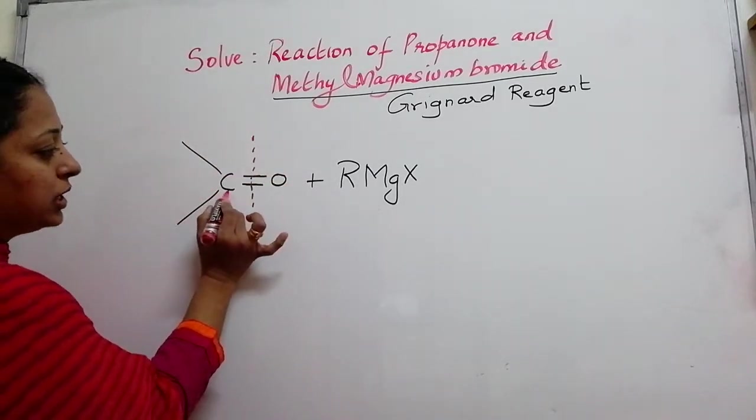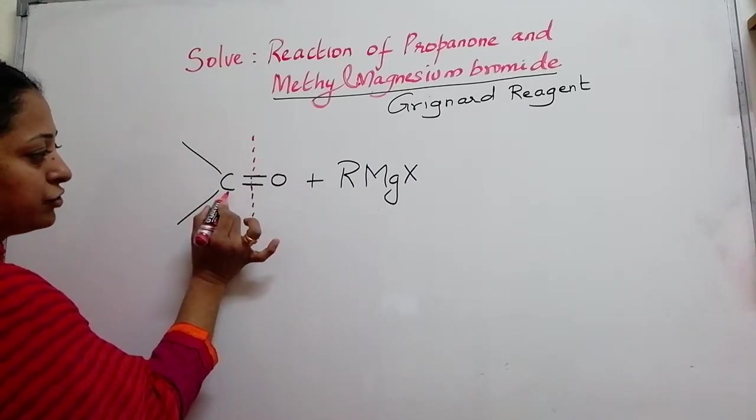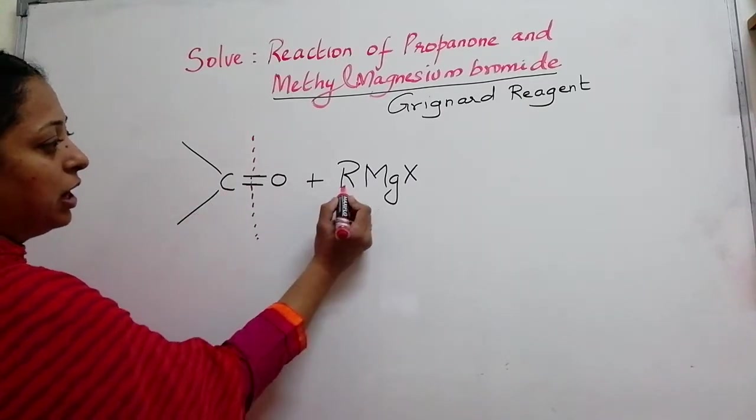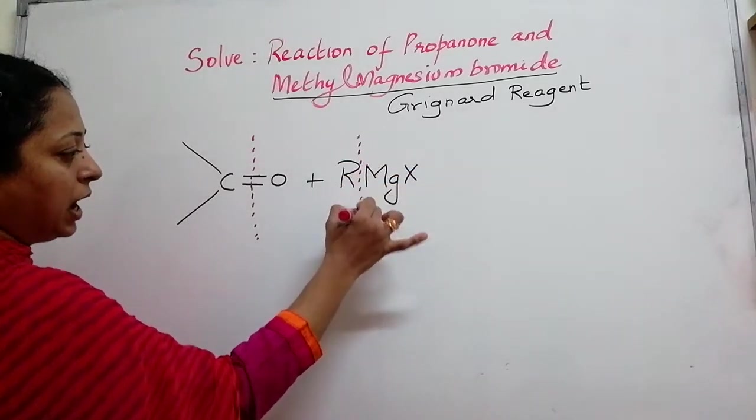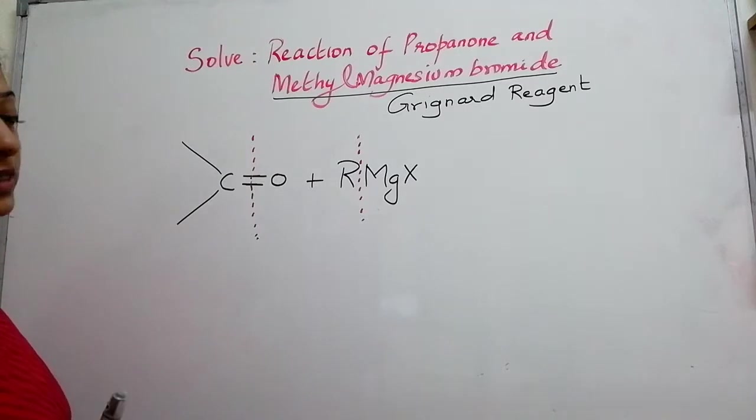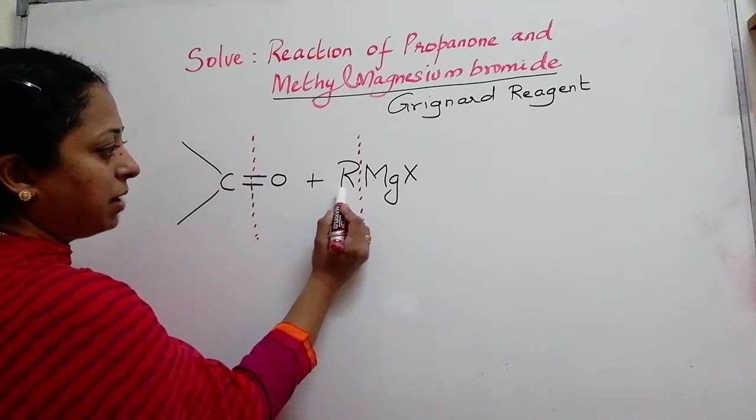We all know that oxygen is found to be electronegative whereas carbon is found to be electropositive. Similarly, out of RMgX there is a break between R and Mg because of its weaker bond nature. Now, what should we do?